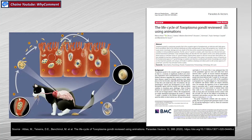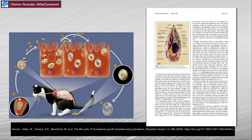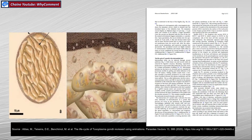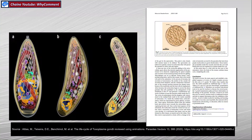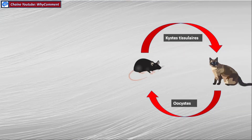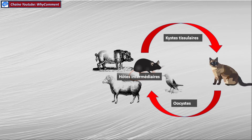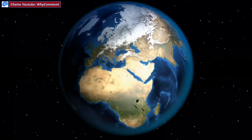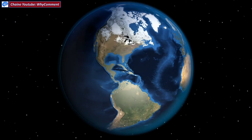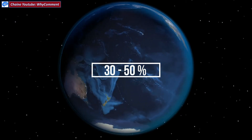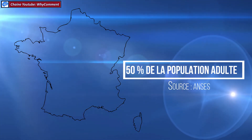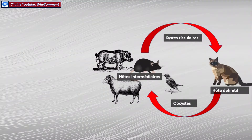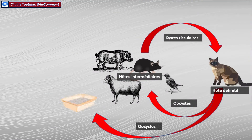La toxoplasmose est une maladie infectieuse parasitaire transmise par les chats et d'autres félins, provoquée par le parasite unicellulaire Toxoplasma gondii. Le cycle de reproduction du parasite s'effectue dans l'intestin du chat, le seul hôte chez qui il peut se reproduire sexuellement. Comme il est éjecté dans les excréments du chat, tout animal en contact avec des poussières ou de l'eau contaminée peut devenir un hôte intermédiaire. D'après une étude dans la revue Lancet en 2004, on estime que 30 à 50% de la population mondiale est infectée — c'est un des parasites les plus répandus dans le monde.